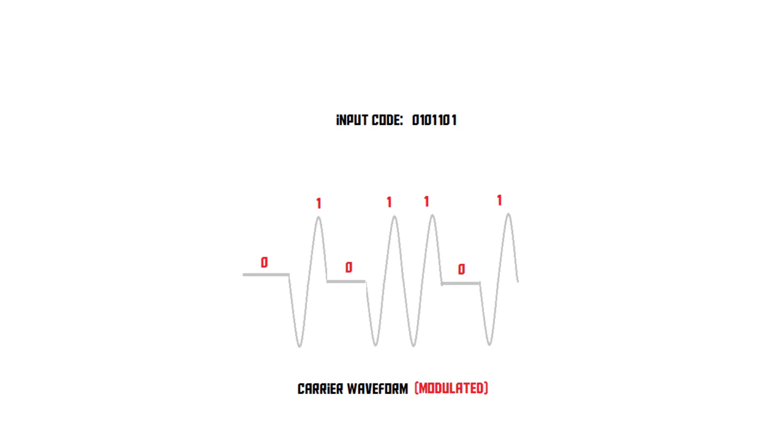You can also do ASK with more levels — for example, four levels at 100 percent, 60 percent, 30 percent, and zero. In this case, you can send two bits of data at the same time, because two bits of data have four possible values. So a four-level ASK system lets you send two bits simultaneously. This has the same disadvantage as AM: it's susceptible to interference because it adjusts the amplitude.